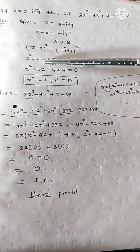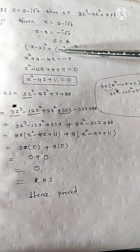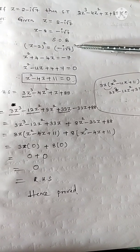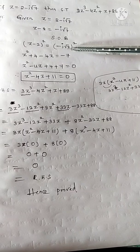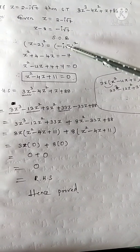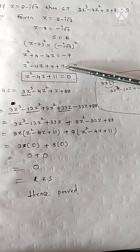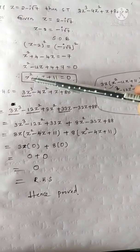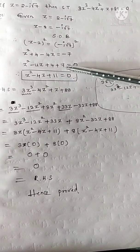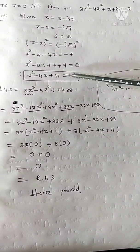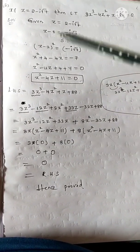Expanding: z square plus 4 minus 4z. On the right side, i square equals minus 1, and root 7 square is 7, so the result is 7 positive. Moving 7 to the left side gives plus 7. So finally we got z square minus 4z plus 11 equal to 0. This is the most useful relation — you can utilize this in further steps.